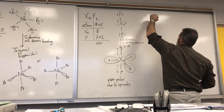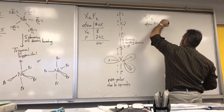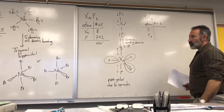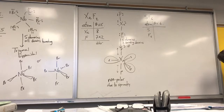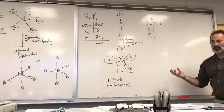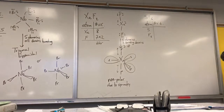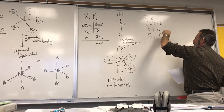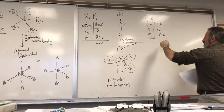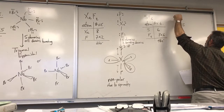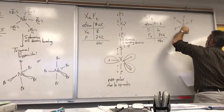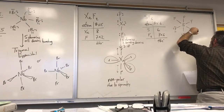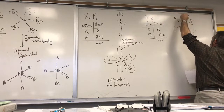Sulfur hexafluoride is our next example. There are six electrons in sulfur, seven in fluorine, and there are six fluorine atoms, so 6 + 42 = 48 electrons to account for in the Lewis structure. We'll place six fluorine atoms on the sulfur indiscriminately without suggesting any geometry at first, and we find that we can disperse all the remaining electrons to complete the octets for fluorine.